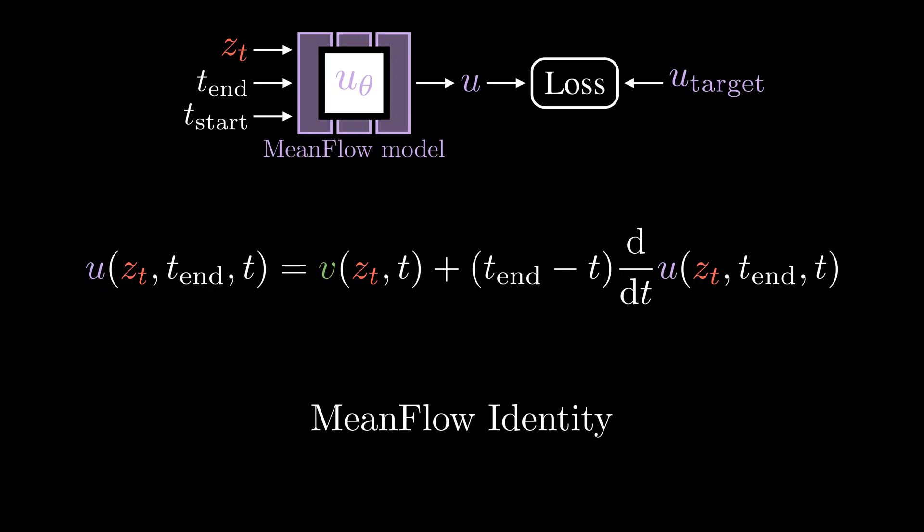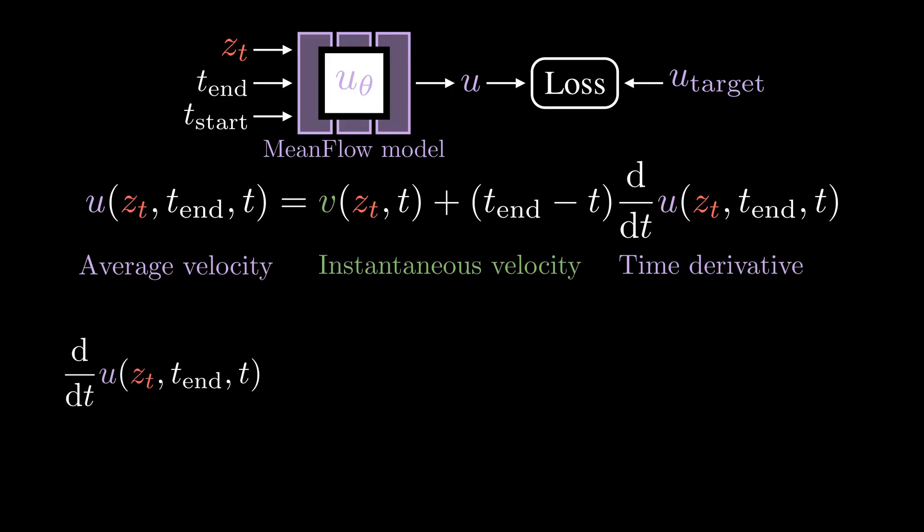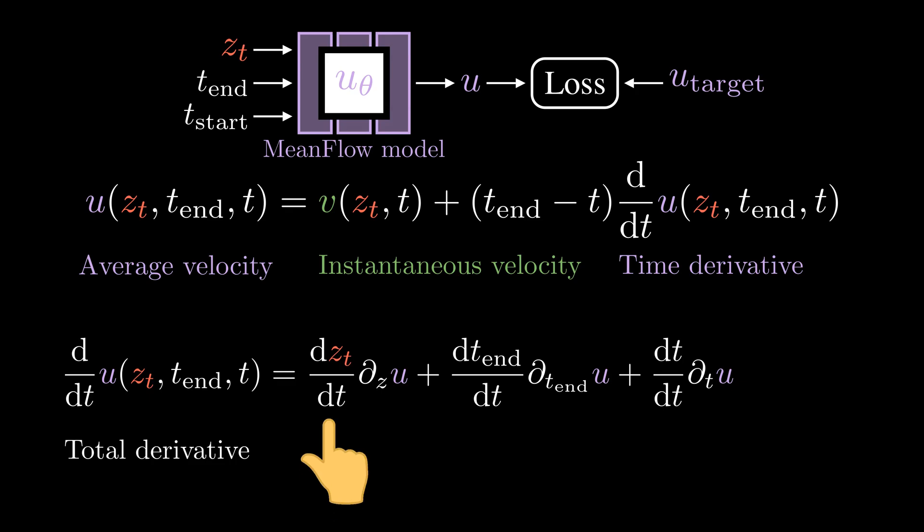But how do we compute this time derivative term? This is a total derivative. The multiple input variables to this function U are themselves functions of the time variable t. Intuitively, when we track how the average velocity U changes as time t changes, we take into account that input variable zt, t_end, and t could also change with time t.